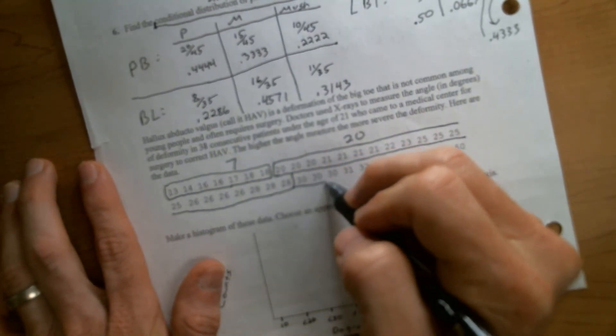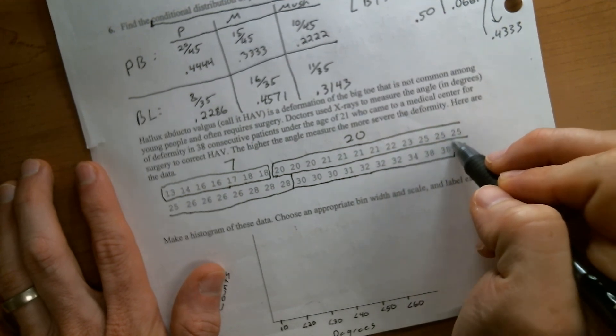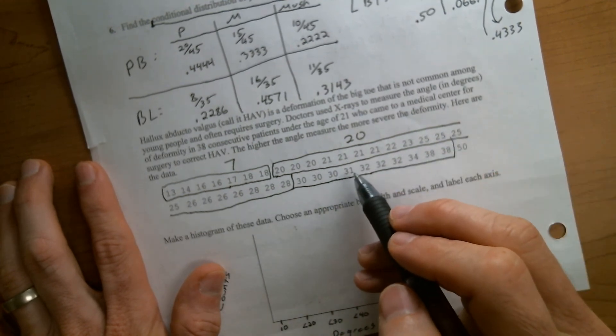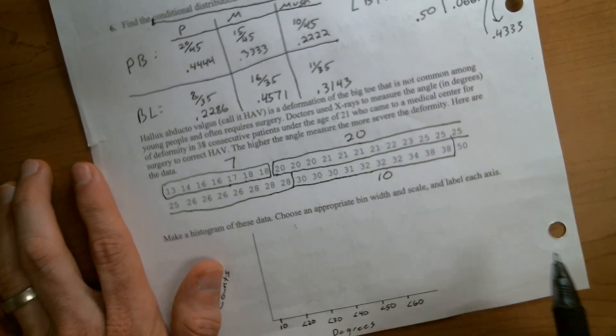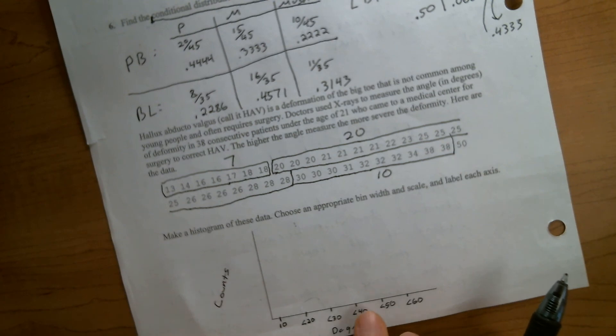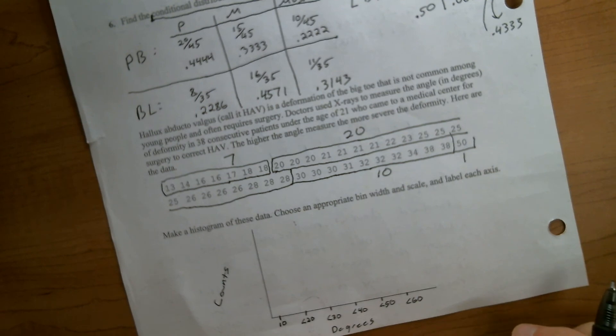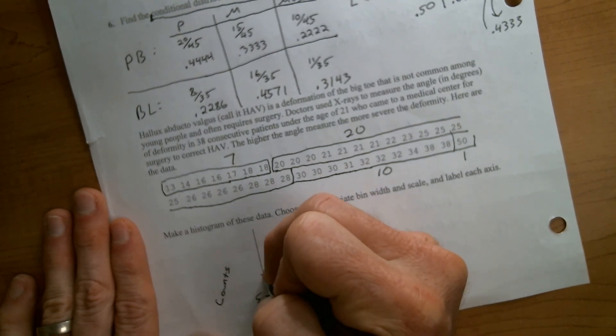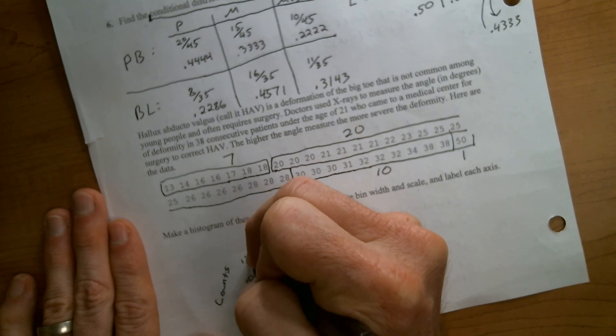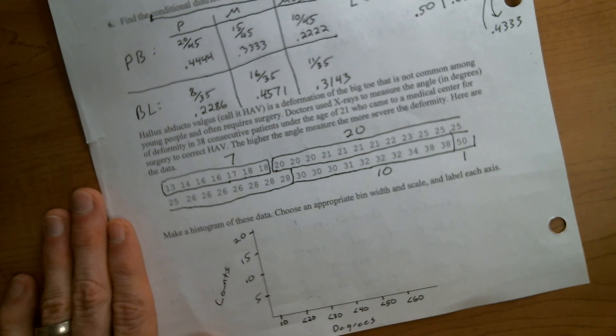Then we have 1, 2, 3, 4, 5, 6, 7, 8, 9, 10 observations here. There's going to be zero observations in the 40 to less than 50 bar, and then there's going to be one observation in that final bar there. So why don't we go up by 5s, and we'll say this is 5, this is 10, this is 15, and this is 20.